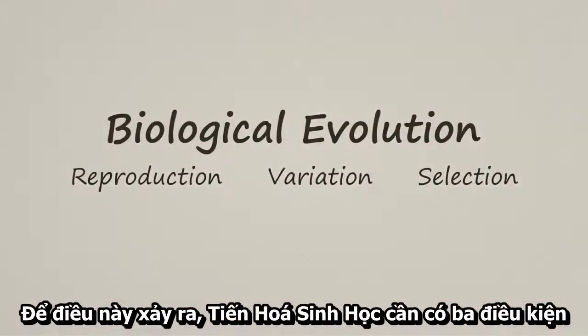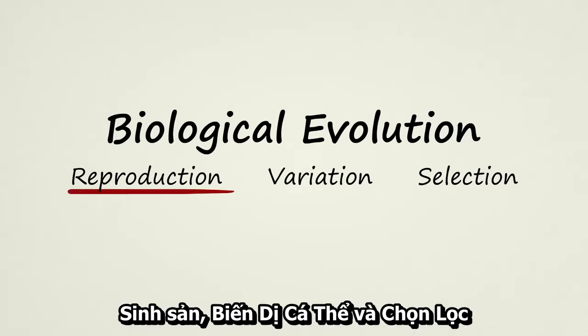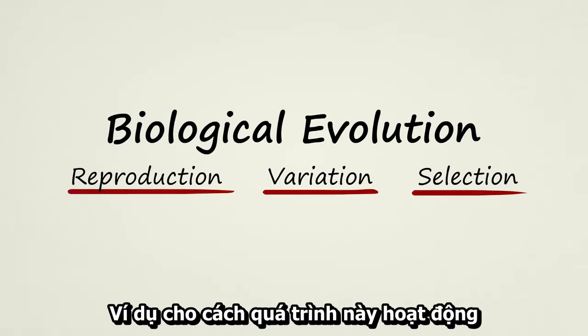For this to happen, biological evolution typically requires three conditions: reproduction, variation, and selection. Let's see how this works.